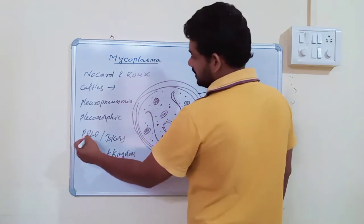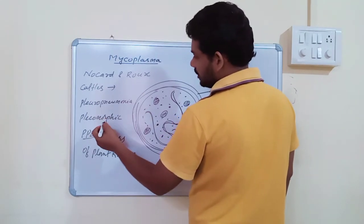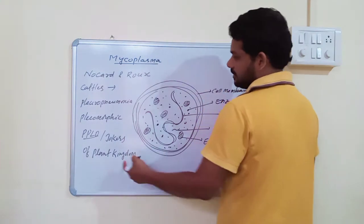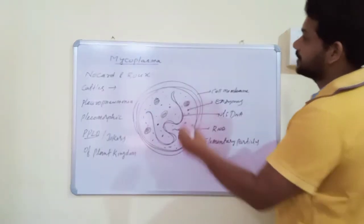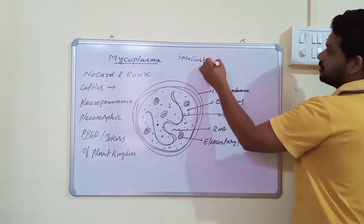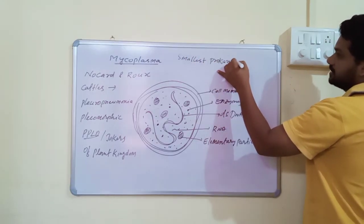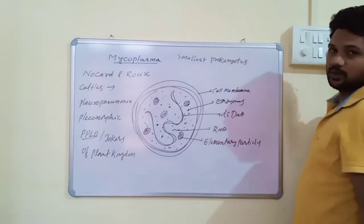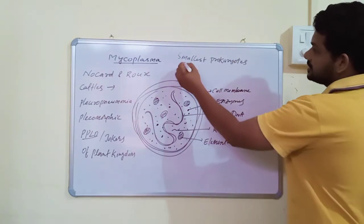Mycoplasmas are also called PPLO, pleuropneumonia-like organisms or jokers of plant kingdom. They are the smallest prokaryotic organisms. This point is very important.